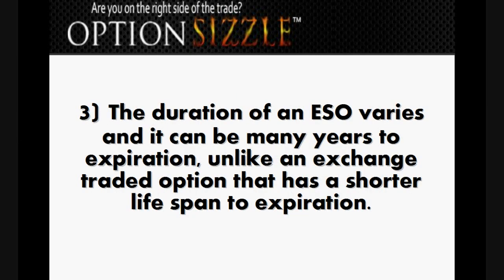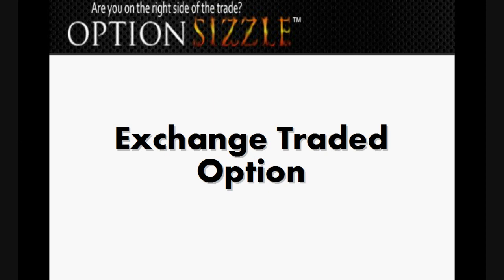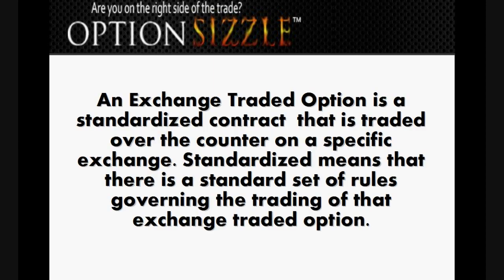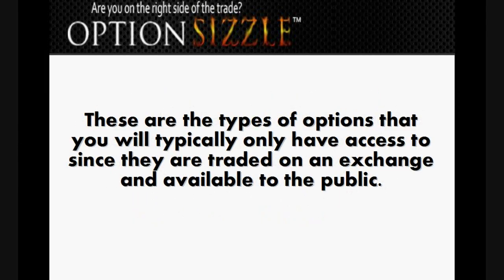Third, the duration of an ESO varies and it can be many years to expiration, unlike an exchange traded option that has a shorter lifespan to expiration. An exchange traded option is a standardized contract that is traded over the counter on a specific exchange. Standardized means that there is a standard set of rules governing the trading of that exchange traded option. These are the types of options that you will typically only have access to since they are traded on an exchange and available to the public.